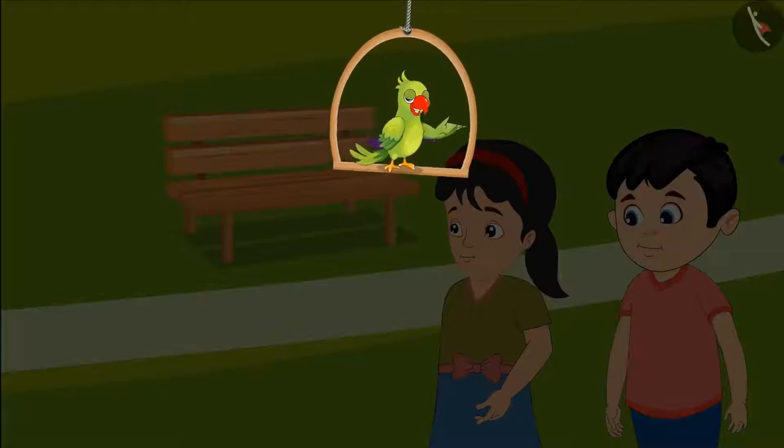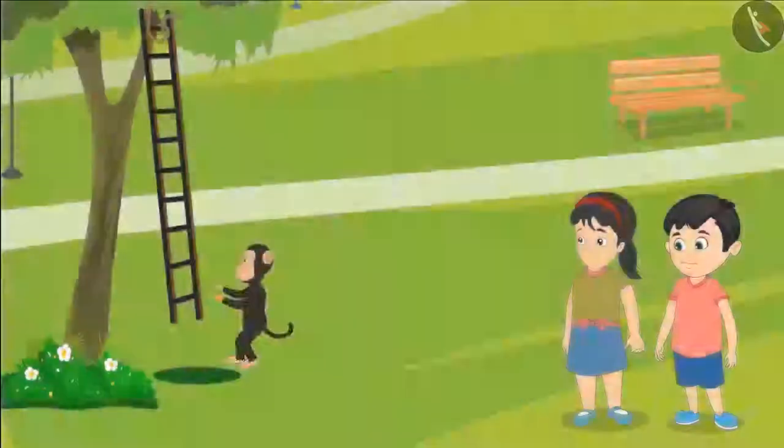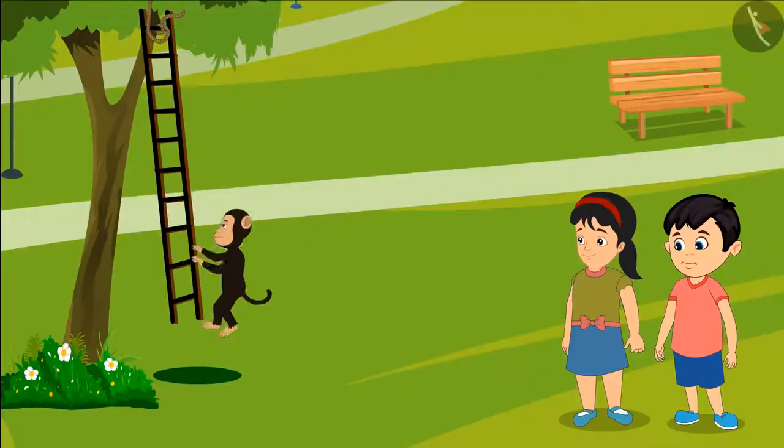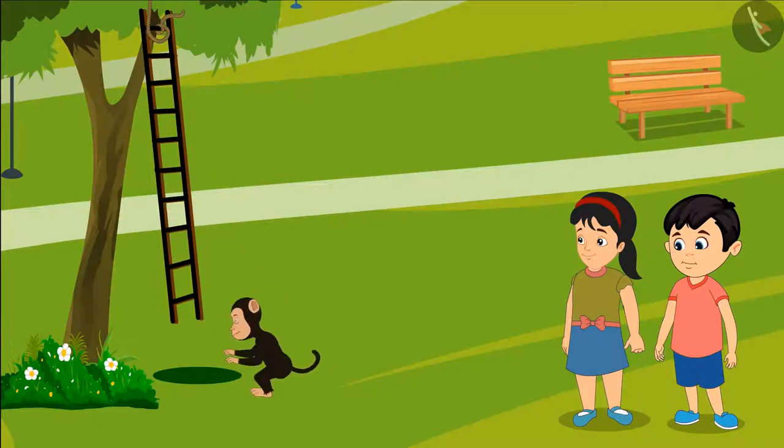Today, Chotu has gone to the park to play with his sister Pinkie. When they reached there, they saw a ladder hanging from a tree and a monkey playing on it. They started watching the monkey play.